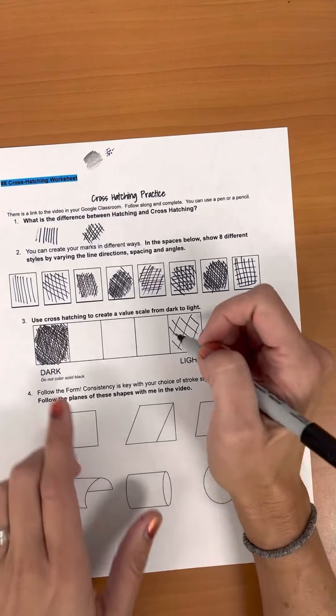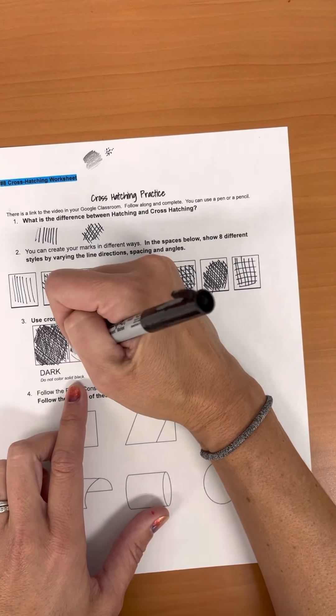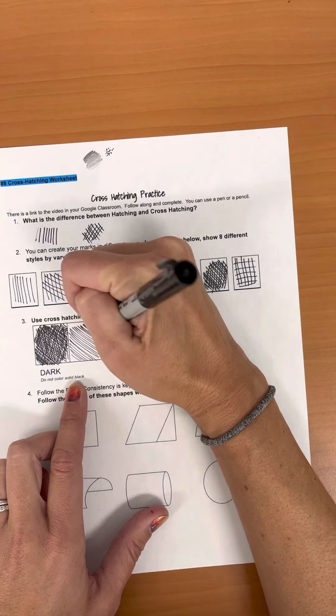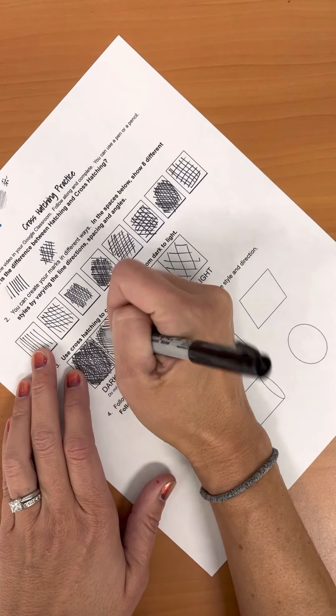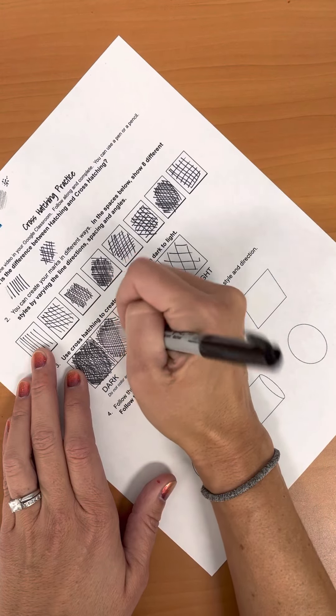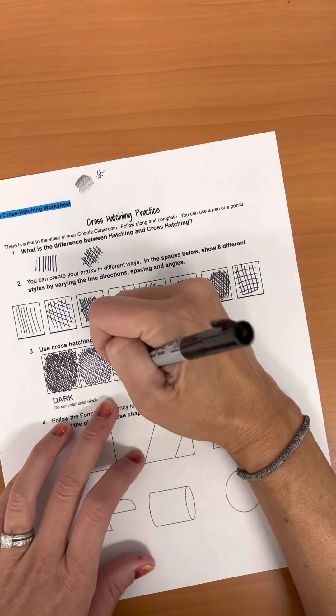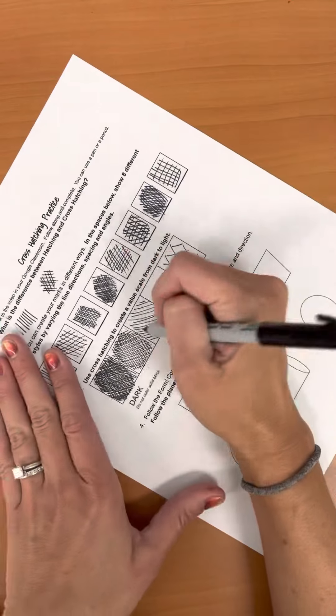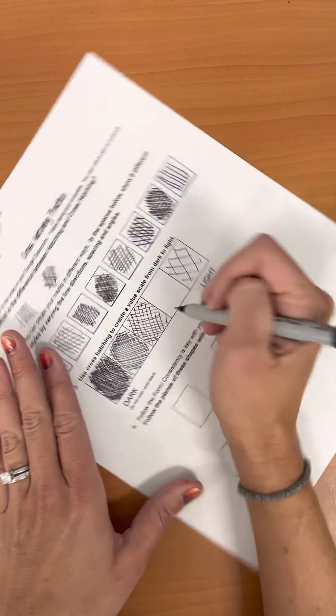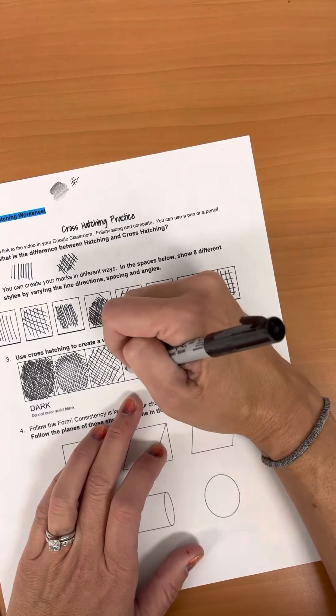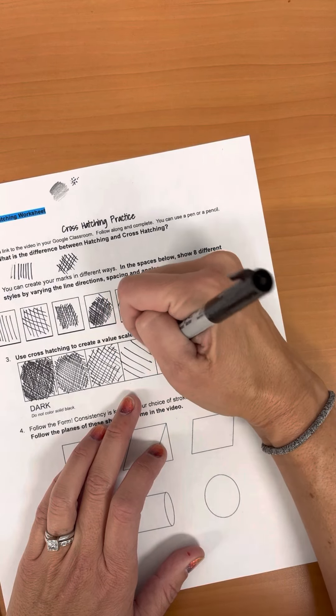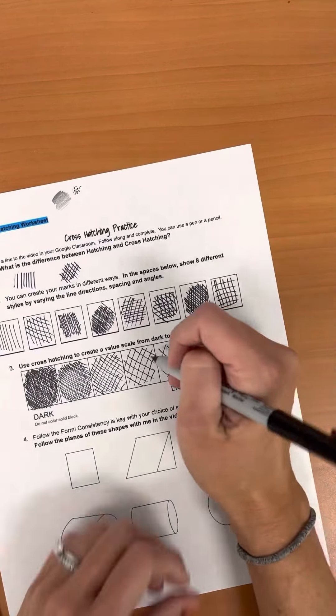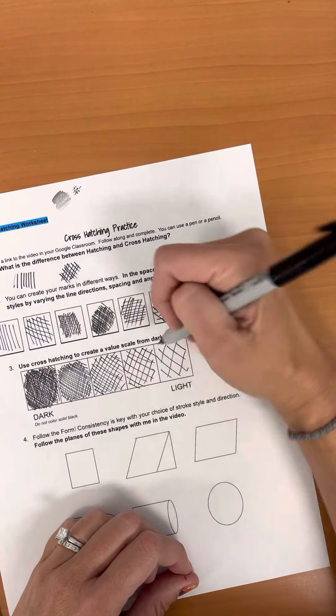So this is really dark, this is really light, and then in the spaces between you're going to fill in. Now you can always add more, so my rule of thumb is to not go too dark too quick because you can add more in but you can't take them away. So go a little easy at first. You can always add in a couple to fill it.